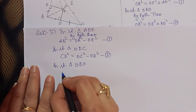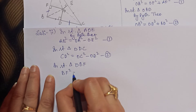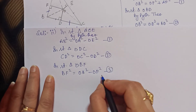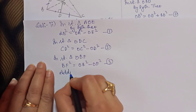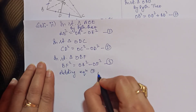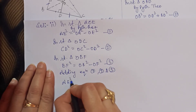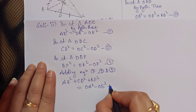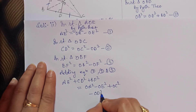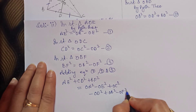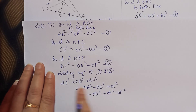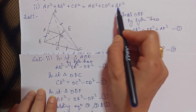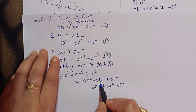In right triangle OBF: BF² = OB² − OF². یہ third equation آ گئی۔ Again adding equations 1, 2 اور 3: AE² + CD² + BF² = OA² − OE² + OC² − OD² + OB² − OF²، یعنی = OA² + OB² + OC² − OD² − OE² − OF²۔